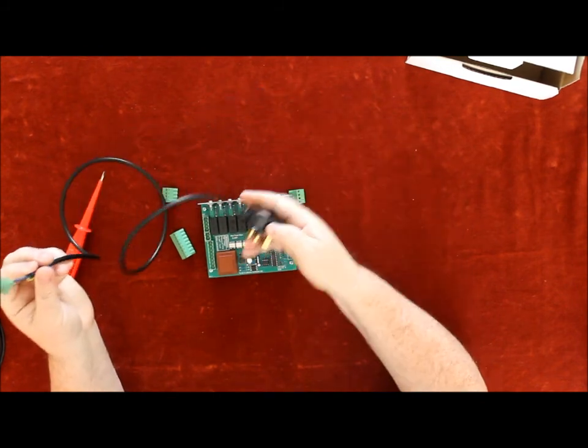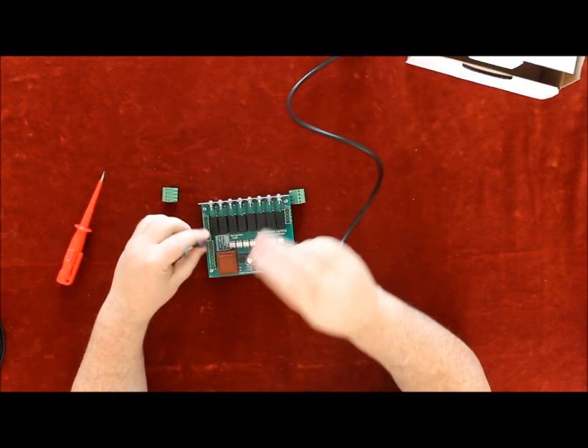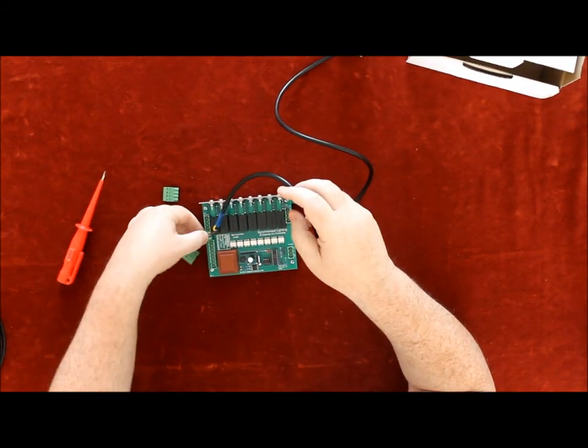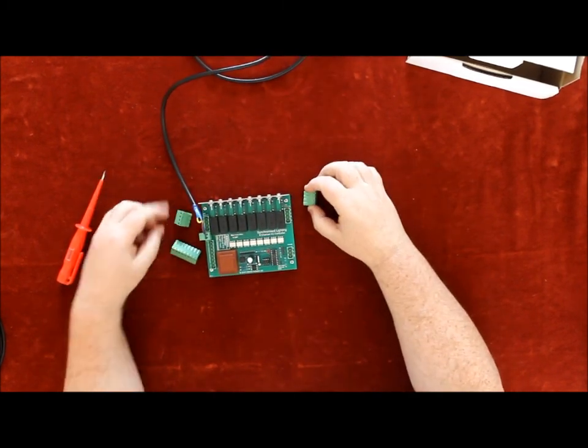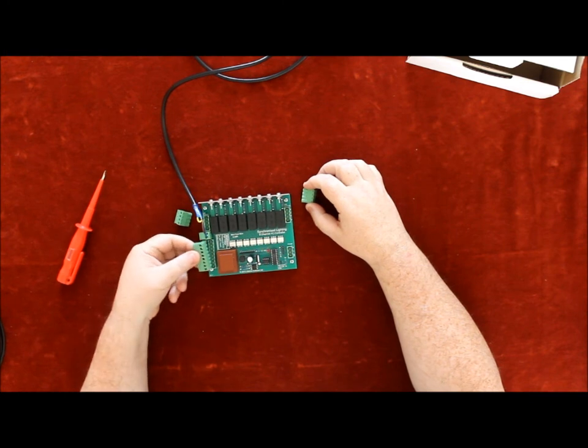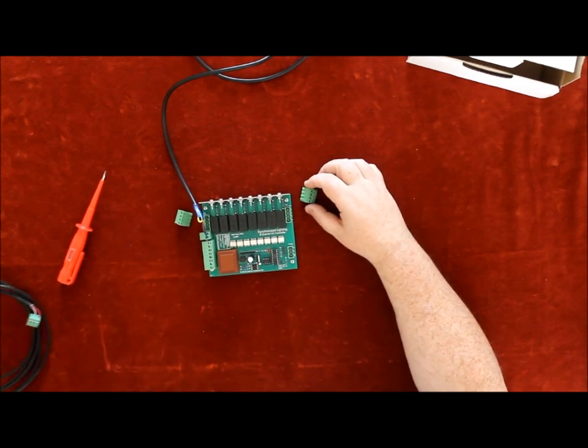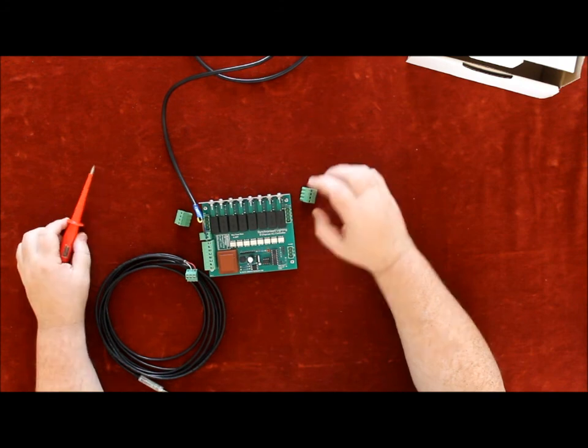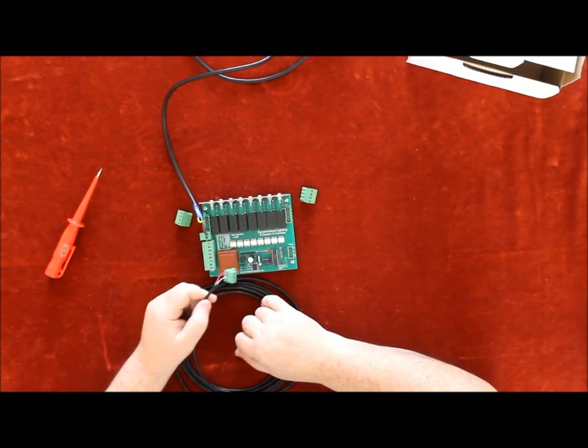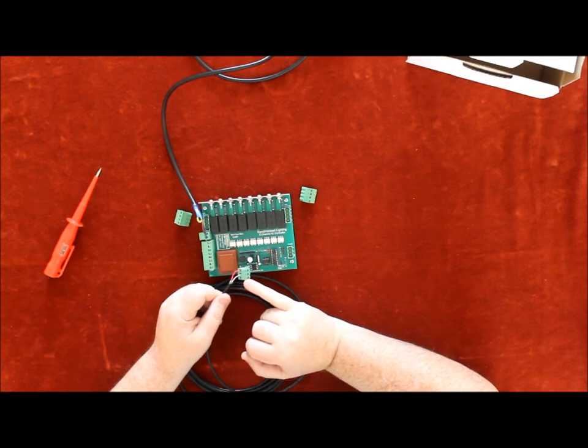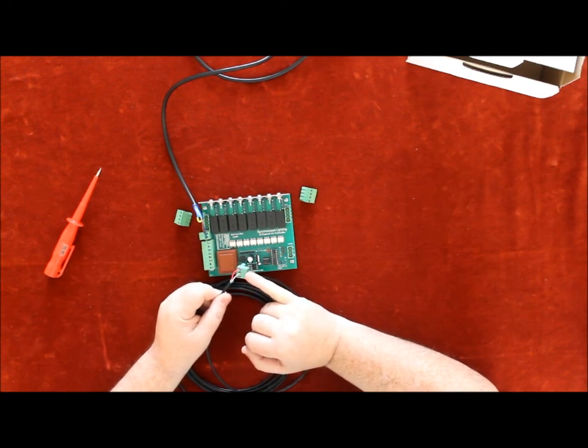When we're ready, that goes into the mains and that plugs onto the board like so. For the USB interface cable, A is white and B is red.